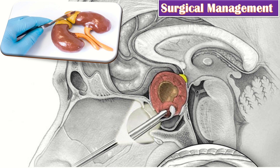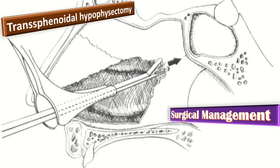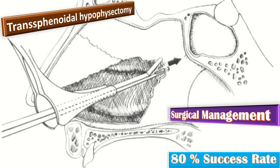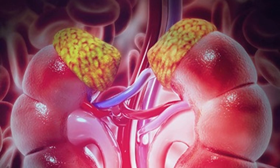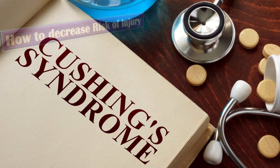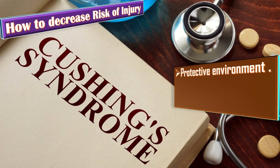A very important surgery is transsphenoidal hypophysectomy. It is the treatment of choice if Cushing syndrome is caused by a pituitary tumor and has an 80% success rate. Adrenalectomy is the treatment of choice in patients with primary adrenal hypertrophy.